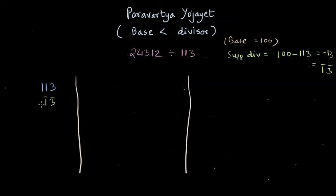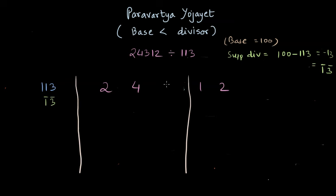Now let's write the dividend. Our base is 100, which has two zeros, so we reserve two places on the rightmost side for the remainder. We write 2 and 4 of 24,312 in the quotient section, and the remaining digits 3, 1, 2 in their positions. The rightmost part is for the remainder and the middle part gives the quotient.